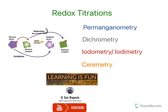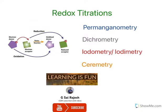Before getting into the topic we need to understand what reduction and oxidation mean with respect to electrons. If an electron is removed from a substrate it is called an oxidation process. If an electron is gained by a substrate the process is called reduction. The electron donor gets oxidized, whereas the electron acceptor gets reduced.